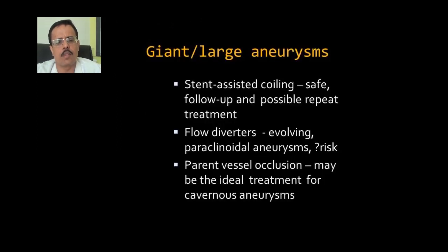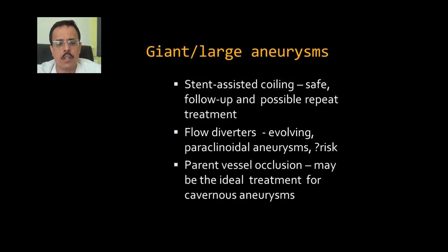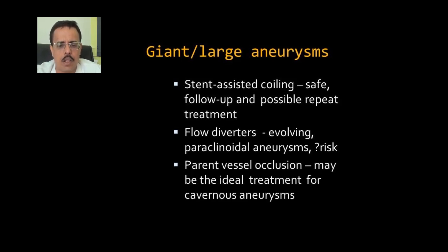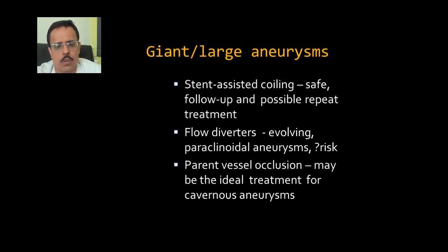So where are we in giant and large aneurysms? Stent-assisted coiling is safe but requires follow-up and possible repeat treatment. Flow diverters are evolving and are probably the treatment of choice for large and giant broad-neck paraclinoidal aneurysms. In trained hands with careful patient selection, the risk is quite reasonable. Parent vessel occlusion may still remain an option in cavernous large and giant aneurysms with good collateral flow through the communicating arteries.